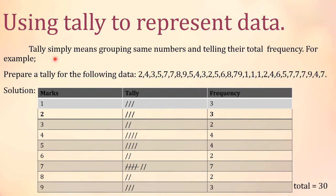Right now we are looking at using tally to represent data. What is tally? It simply means grouping same numbers and telling their total frequency. For example, prepare a tally for the following data: 2, 4, 3, 5, 7, 7, 8, 9, 5, 4, 3, 2, 5, 6, 8, 7, 9, 1, 1, 1, 1, 2, 4, 6, 5, 7, 7, 7, 7, 9, 4, 7. You prepare a table with columns for the number, tally, and frequency.